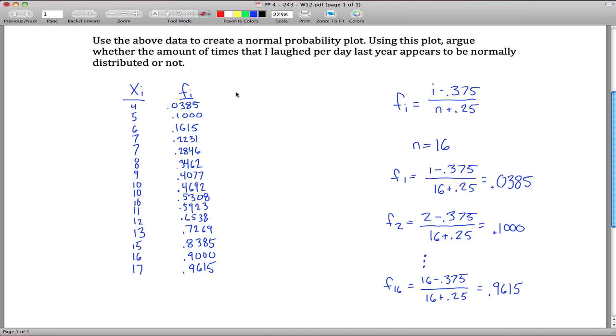So now what I want to do is create my third and final category, which is Z sub I. And what Z sub I is is the probability that Z is less than Z sub I is equal to F sub I. So what I'm saying here is the number I'm going to put right here is the number so that 0.0385 is the area to the left of that number.